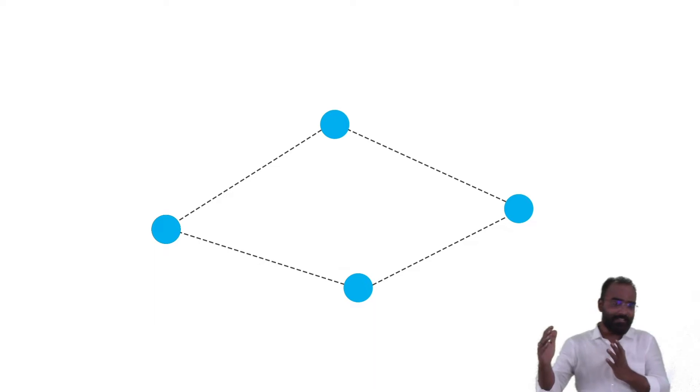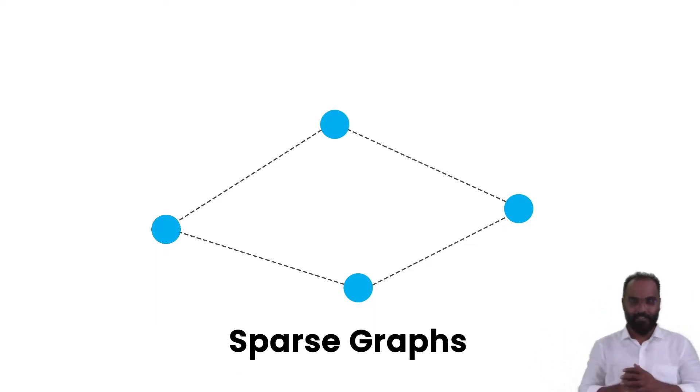And if it is not dense, what is it called? A sparse graph. So, if every vertex is not connected to every other vertex, there's not exactly a definite number to it, but if it is not a dense graph, you can call it a sparse graph.